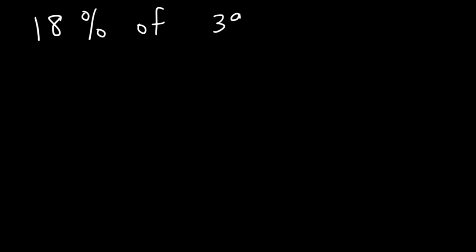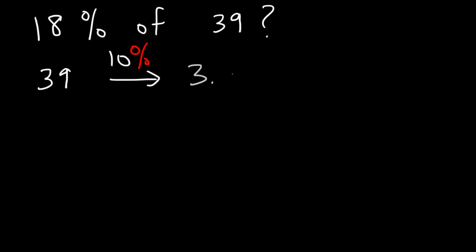Now, what is 18% of 39? Say your restaurant bill comes to $39 and you want to leave an 18% tip — how much should you pay? First, let's find 10%: our goal is to reach 18%. 10% of 39 is 3.9.